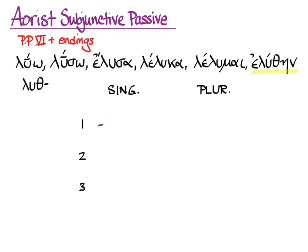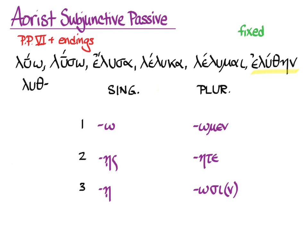So here are the endings, and these should look familiar: o, ace, a, omen, eta, osi or osin — exactly the same as the present and aorist subjunctive active endings. You'll know they're passive because they'll be on the sixth principal part. Accent is fixed on the long vowel of the ending, so you might as well just learn the circumflexes on the endings. Simple aspect, and no translation until you know what kind of clause it's in.